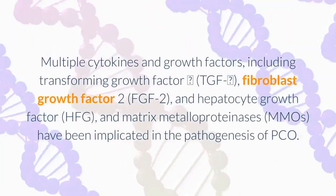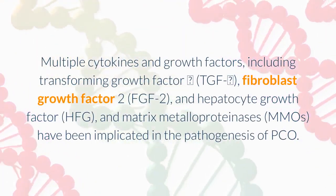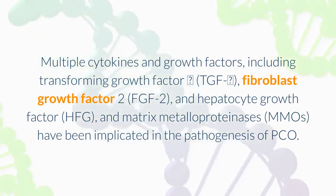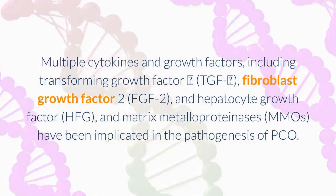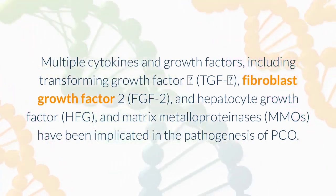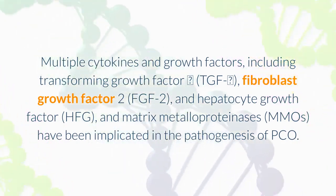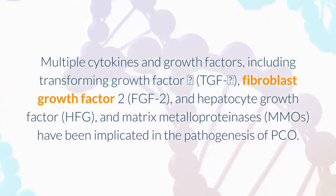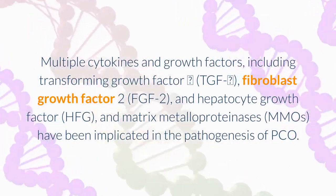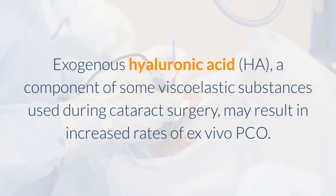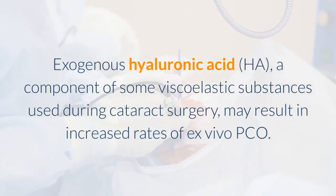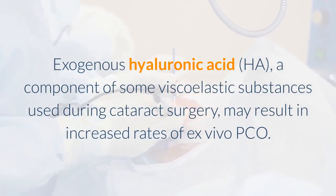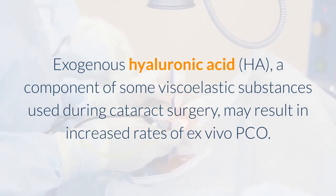Multiple cytokines and growth factors, including transforming growth factor beta (TGF-β), fibroblast growth factor 2 (FGF-2), and matrix metalloproteinases (MMPs), have been implicated in the pathogenesis of PCO. Exogenous hyaluronic acid, a component of some viscoelastic substances used during cataract surgery, may result in increased rates of ex vivo PCO.